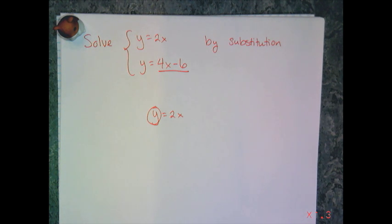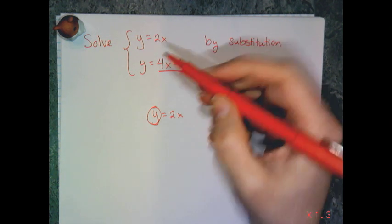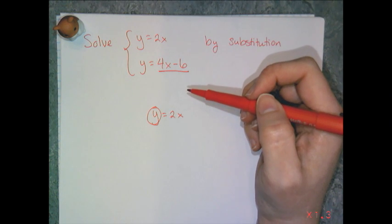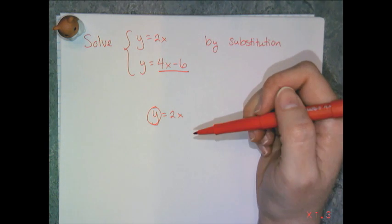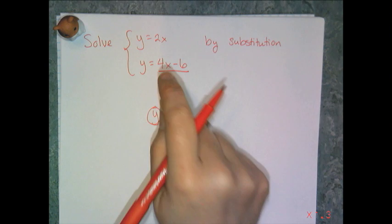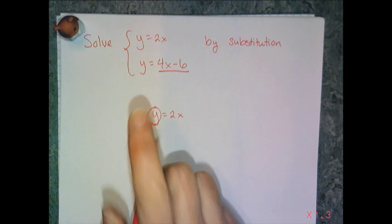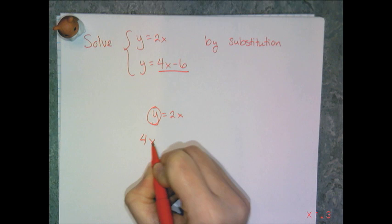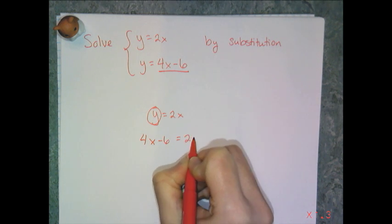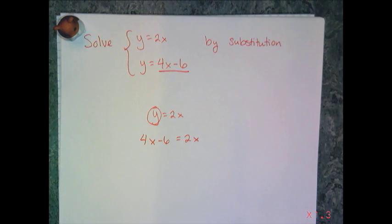So when I use the substitution method, I'm going to basically put one equation into the other equation so that I'm only left with one variable. So this 4x minus 6 replaces that y, so I get the equation 4x minus 6 equals 2x. And so now I have an equation in one variable that I can solve.